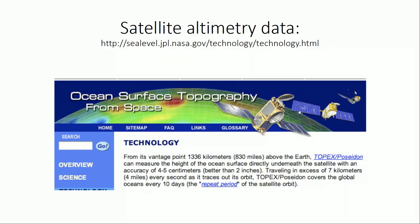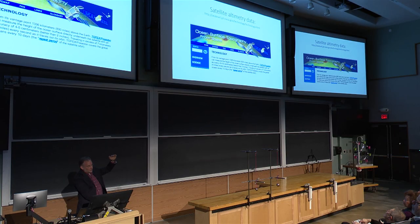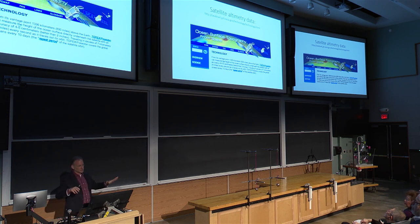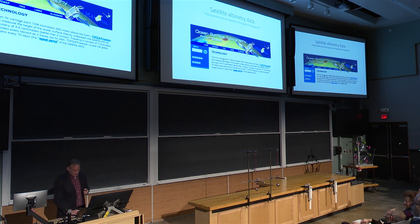Regarding satellite altimetry: what we currently have are nadir altimeters. They work based on the principle that you send a microwave pulse down to the surface and then it returns. If you have a high tide, it's going to take less time to return; if you have a low tide, it's going to take more time — a pretty simple principle. The accuracy is a few centimeters, and that accuracy is spread across a whole spectrum, so if you're looking at a particular wavelength-frequency combination, you could have a much better accuracy than that.